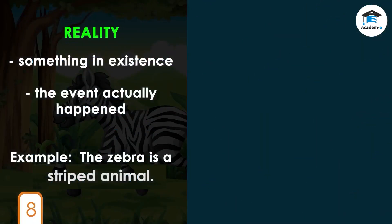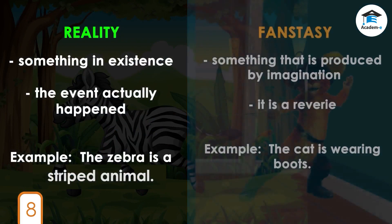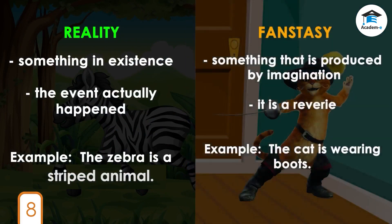To recap: reality is something that actually exists or happens, meaning a real event, occurrence, or situation that actually happened. On the other hand, fantasy is defined as something that is produced by the imagination.